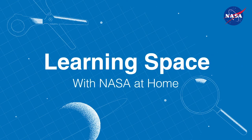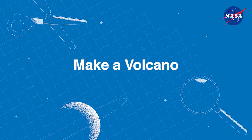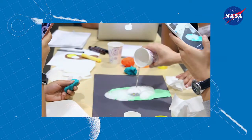Hi everyone, this is Brandon from NASA's Jet Propulsion Laboratory, and what we're going to do today is create and map a volcano using baking soda, vinegar, and play-doh.